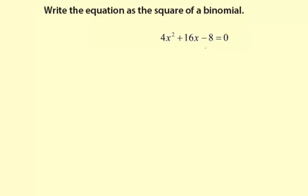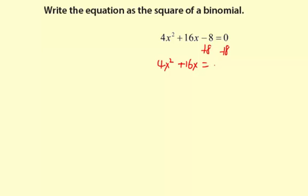The first thing we're going to do is add the constant term to both sides. That's going to give us 4x squared plus 16x equals 8.